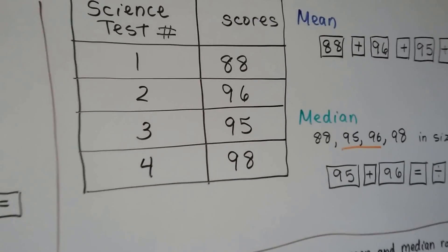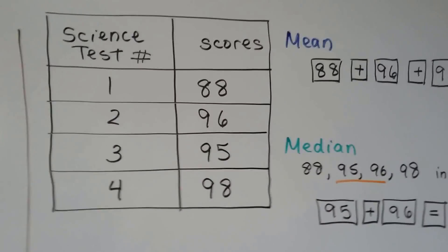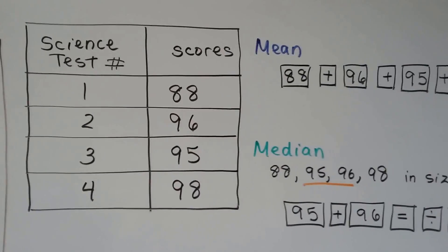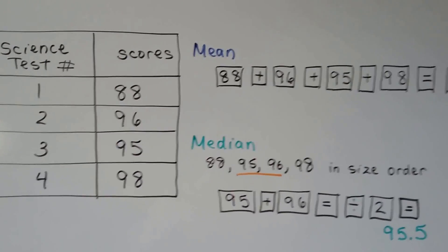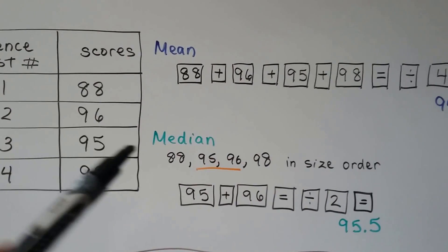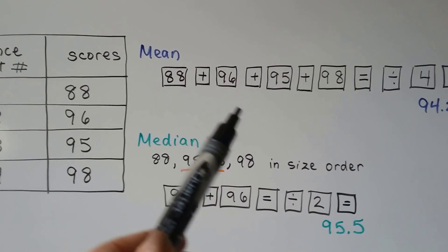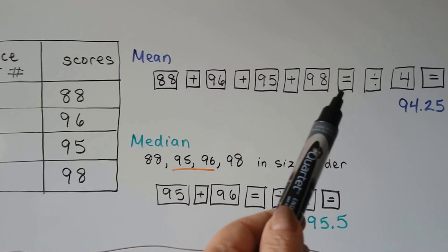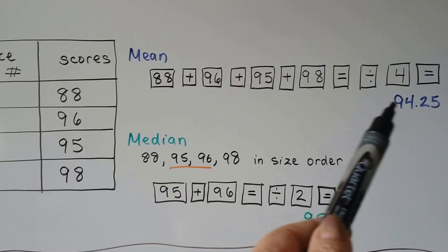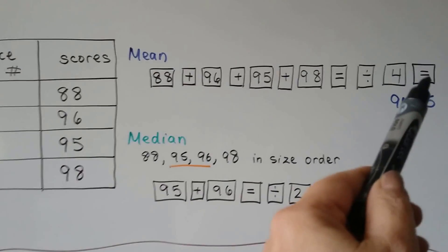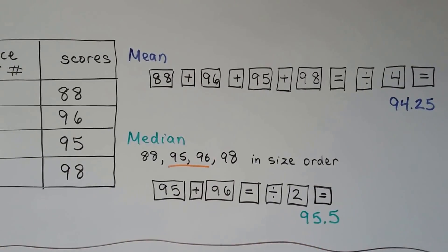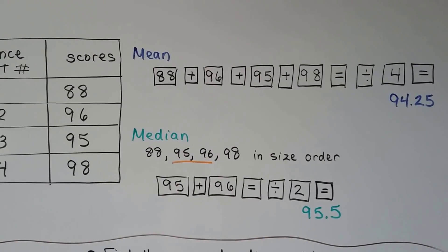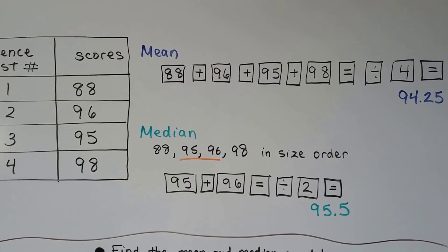So here we've got a science test. There's four different science tests and four different scores. We can find the mean, the average score, by adding them all up: 88 plus 96 plus 95 plus 98. We hit equal, then division sign, then 4 because there's four numbers, and then equal again, and we get 94.25 as the average, the mean score.